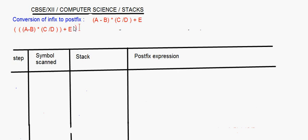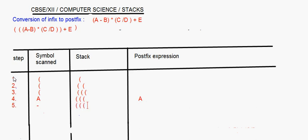Now we will evaluate this expression. All the symbols have to be scanned one by one. The first symbol is an opening bracket — whenever you read an opening bracket, it goes into the stack. The next one is again another opening bracket, and this also goes into the stack. The third one is again an opening bracket, this also goes into the stack. After that you have A. A is the operand — whenever you read an operand, that operand will always go into the postfix expression. After that, the minus sign — it is the operator, and the operator will always come inside the stack.